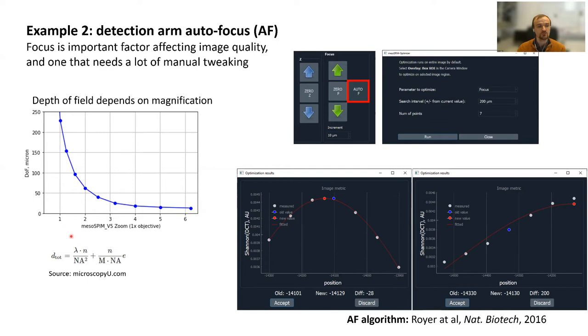To simplify the user experience, I implemented the autofocus feature in the software. It works quite straightforward. Within a given interval from the current position, it takes a number of snapshots at different defocus positions, then it fits with a Gaussian distribution and finds the peak of the Gaussian. The red dot is your new position. You can accept it and the microscope detection objective moves to that position. You can repeat it several times.